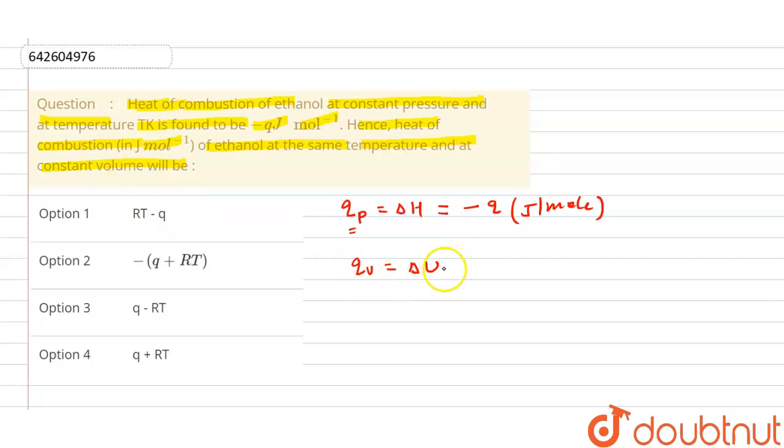That means it is asking for ΔU. For ethanol, C2H5OH liquid, combustion means it will happen in the presence of oxygen. So it will form 2 times CO2 gas plus, how many hydrogen? Six hydrogen, so half of that is 3 times H2O molecules.